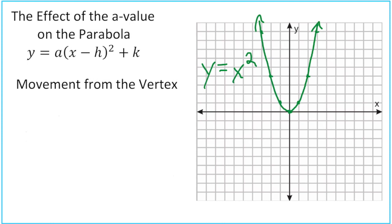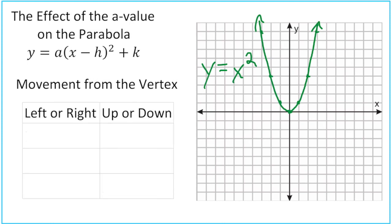Let's set up a little table here. We've got left or right and up or down. From the vertex, when we move left or right one space, notice that we go up or down one squared. If we go left or right two spaces, it's up or down two squared. If we go left or right three spaces, it's up or down three squared. This is what we've done so far with the parent graph y equals x squared, and all the graphs that have an a value of one.